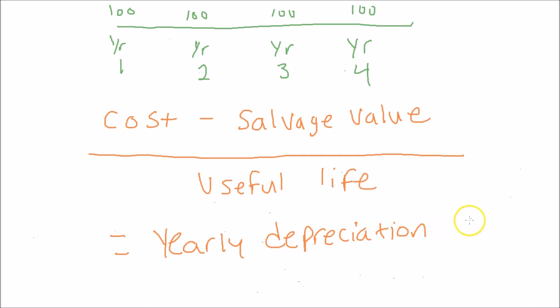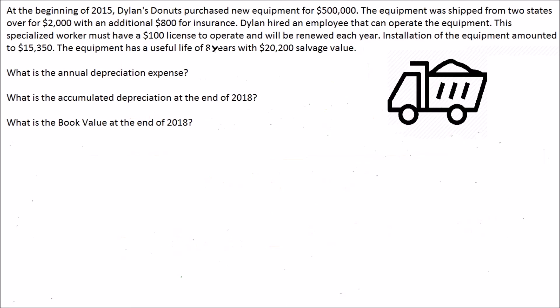That's how much you depreciate each year — that represents the $100 per year in our example. Straight-line is the first type of depreciation method we'll talk about: you depreciate it evenly from year to year. Now let's go ahead and look at a practice problem, and this will make a lot more sense.